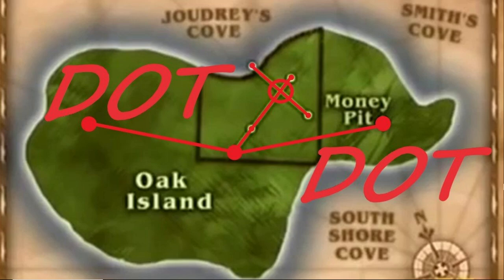The 90-foot stone is very much the start of the Oak Island mystery. Without the 90-foot stone, how could we possibly know that there was anything on Oak Island? I have new information that you may not have heard before, and I'm going to take a pro 90-foot stone perspective, giving you a more concrete foundation on why the 90-foot stone was real and that there is something on Oak Island.